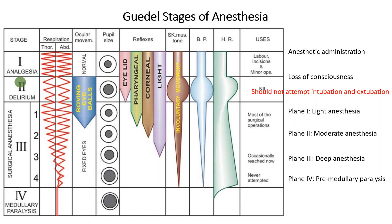Stage 4, or medullary paralysis, occurs when anesthesia is excessively deep, and the medulla oblongata, which controls vital functions like breathing and circulation, becomes severely depressed. This stage is life-threatening and requires immediate intervention. Modern techniques aim to maintain the patient safely in stage 3 while avoiding stages 2 and 4.